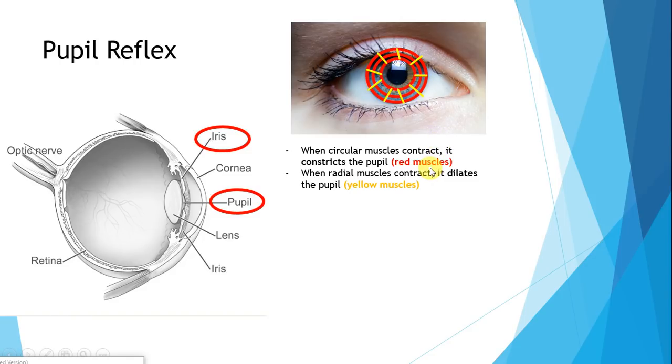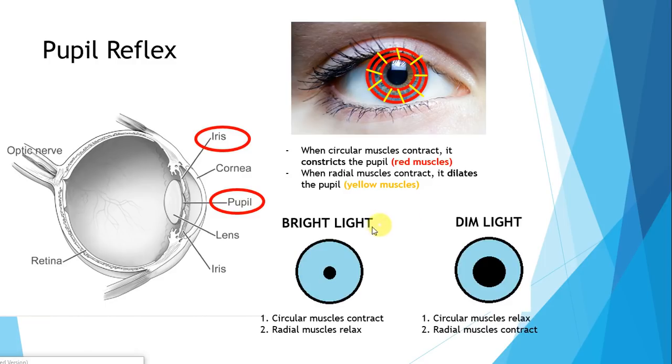Under really bright conditions, you want your pupil size to be small because allowing too much light into the eye can damage it. Under bright light, the circular muscles contract to make the pupils as small as possible, and the radial muscles relax. Oppositely, under dim light conditions, the circular muscles relax and the radial muscles contract. They're muscles that do opposite things. When one contracts, the other relaxes.